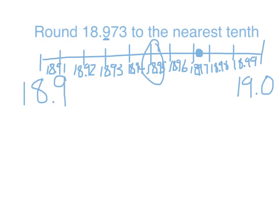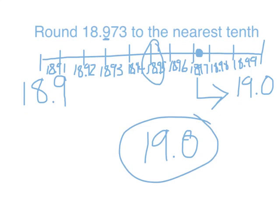This is past my midpoint of 18 and 95 hundredths, which means it's closer to 19 and 0 tenths. So 19 and 0 tenths is the nearest tenth to 18 and 973 thousandths.